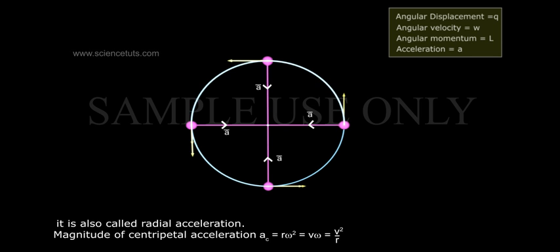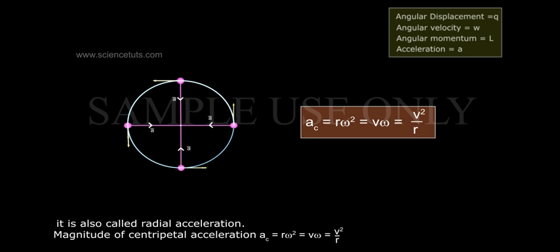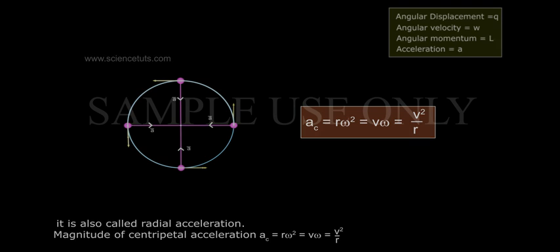The magnitude of centripetal acceleration, a_c, is equal to r·omega², which is also equal to v·omega, and equal to v²/r.